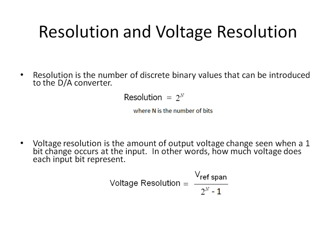Voltage resolution is equal to the reference span — say Vout. Since the output of the digital to analog converter is analog, what is the span? What is the range that Vout can travel in between? And so that's the Vref span divided by 2 to the Nth minus 1.